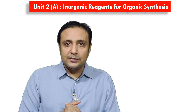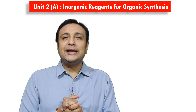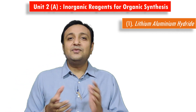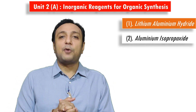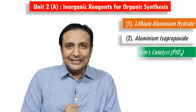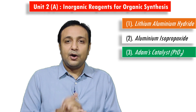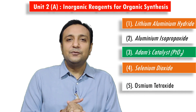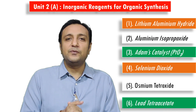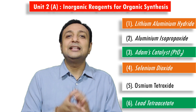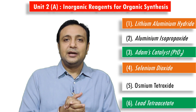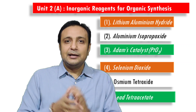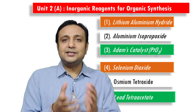This chapter includes important inorganic reagents. The first one is lithium aluminium hydride, the second is aluminium isopropoxide, the third is Adams catalyst (PtO2), the fourth is selenium dioxide, the fifth is osmium tetroxide, and the last one is lead tetraacetate. In this chapter, we will discuss the preparation, applications, and mechanism of these inorganic reagents.